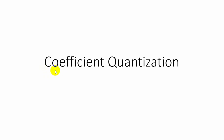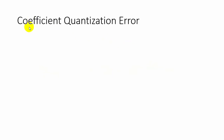In this video we are going to see about coefficient quantization. In finite word length effects, when you are performing quantization, there are different types of errors that occur. The types of errors are input quantization error, product quantization error, and coefficient quantization error. Here we are going to discuss about coefficient quantization error.